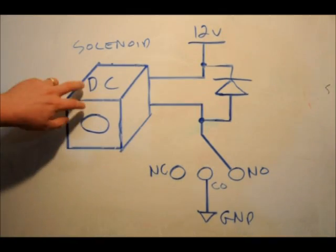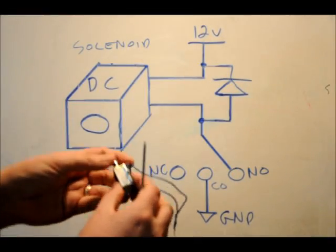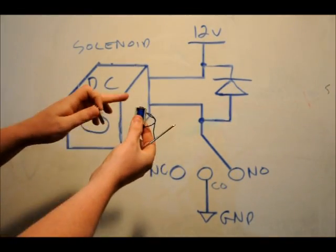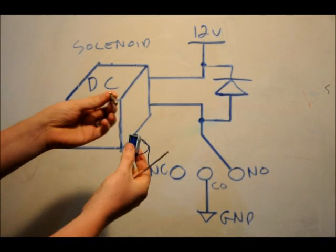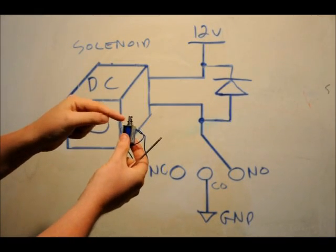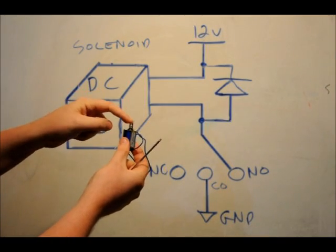What we've got here is a DC solenoid. Now, a DC solenoid is a little unit, typically has a spring on it, comes with basically a base and a plunger. And the plunger typically has a spring on it.